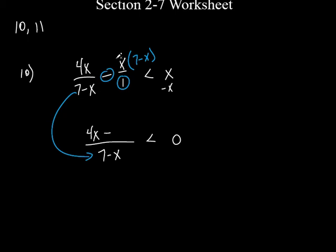We can do that distributing right here in our head. It's negative x times 7, and negative x times negative x. So negative x times 7 is negative 7x. Most people get that part right. It's the second part — negative x times negative x — which is positive x squared.